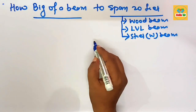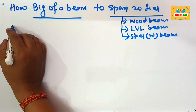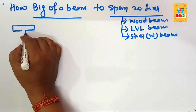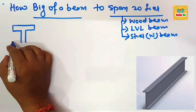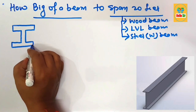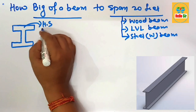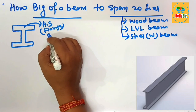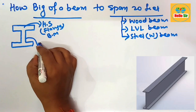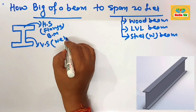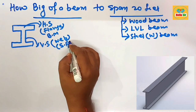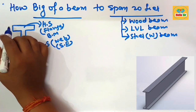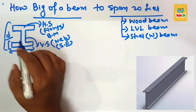Here we make a rough diagram to understand the American wide flange beam. The horizontal section of the beam is known as the flange, which generally resists bending moment. The vertical section is known as the web, and it generally resists shear forces. This is the width of the flange, this is the thickness of the flange, and this is the depth of the wide flange beam.